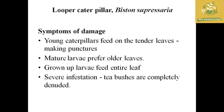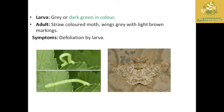The next pest is the looper caterpillar, where the scientific name is Biston suppressaria. The symptom of damage: young caterpillars feed on tender leaves and mature larvae prefer older leaves. The grown-up larvae can eat an entire leaf per day, and in severe infestation the tea bushes are completely defoliated in the field.